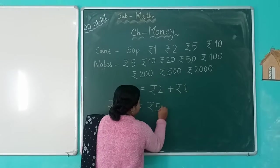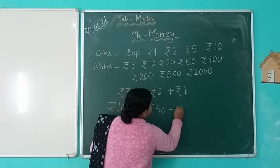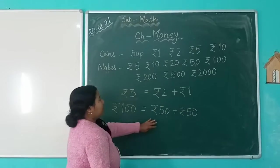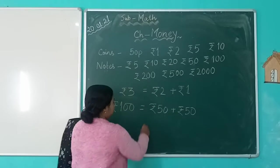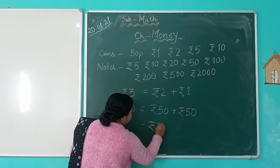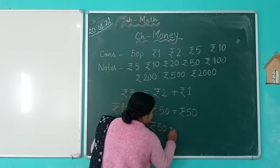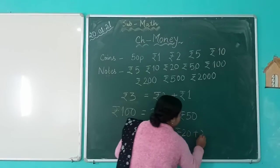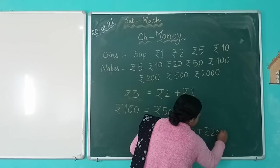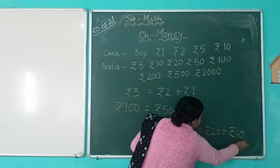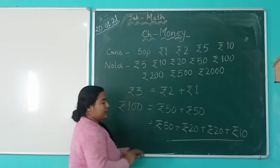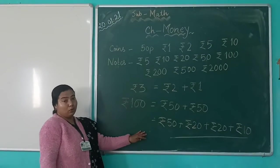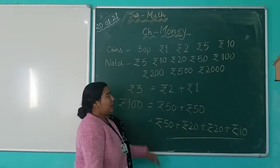For example, 2 rupees plus 50 paisa, or combinations like 20 rupees plus 1, 10 rupees, and so on. You can practice this type of addition at home with different combinations.